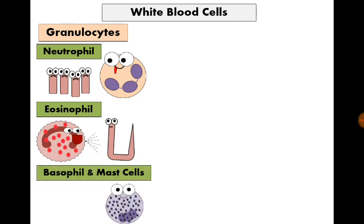The last granulocyte is basophils. Basophils are the cells responsible for allergy. They are found in blood, and their tissue-resident form is called mast cells. The mediators secreted from basophils and mast cells cause allergic manifestations that help the body get rid of microbes, like diarrhea and cough.